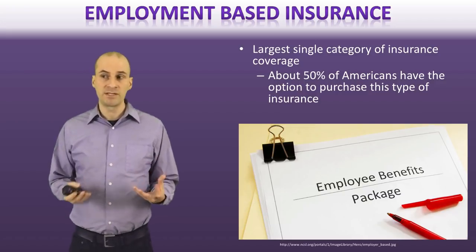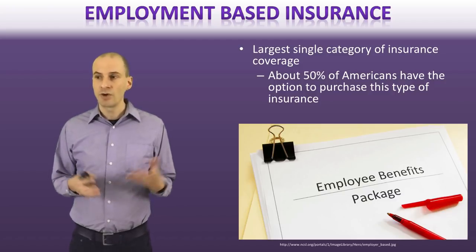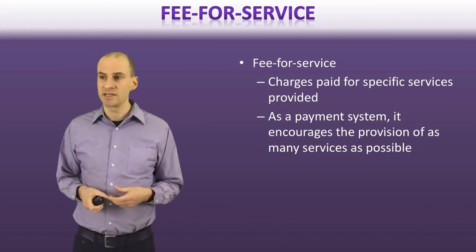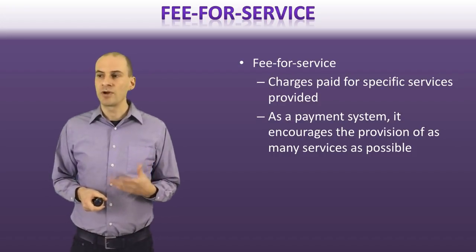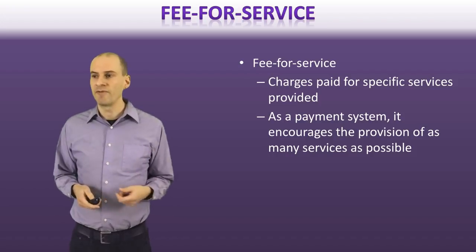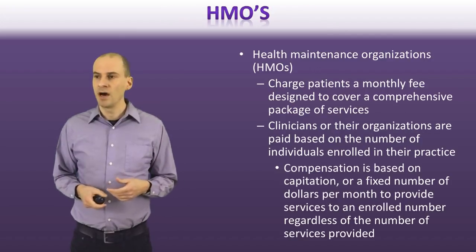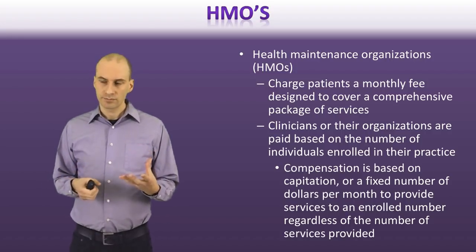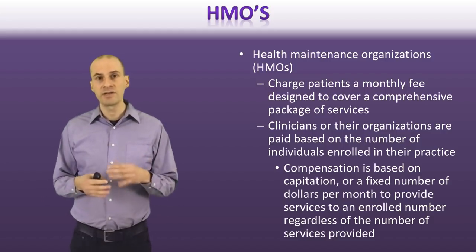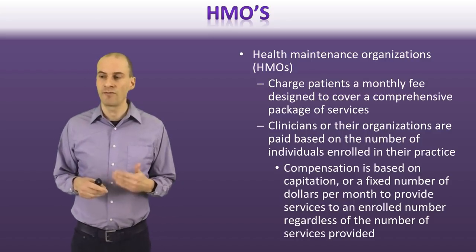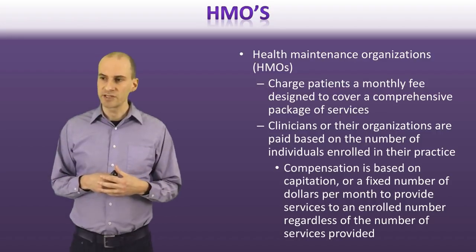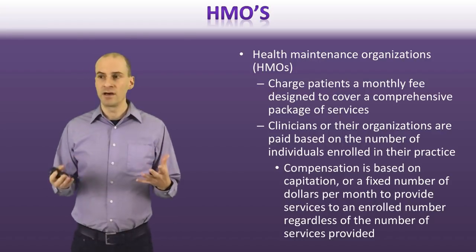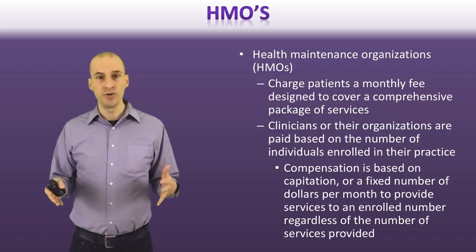The provision of health services through employment-based insurance covers about 50% of the American public, making it the largest category for insurance coverage. There are a range of different approaches. One is fee-for-service, where you're paid based on services provided. Then there are HMOs, which use capitation — they charge a general fee, clinicians get paid that general fee, with the incentive to decrease overall expenditures. The idea is to shift more towards prevention because it's in the interest of the provider and healthcare institution to decrease overall use of services.